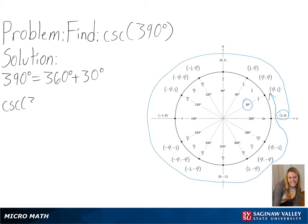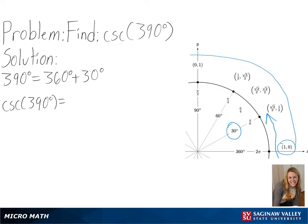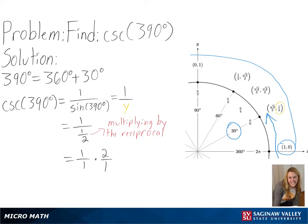Since we are finding the cosecant value, we will need to find 1 over the sine value, or 1 over our y value. So we will get 1 over a half, and then multiplying by a reciprocal and simplifying, we will get 2 as our final answer.